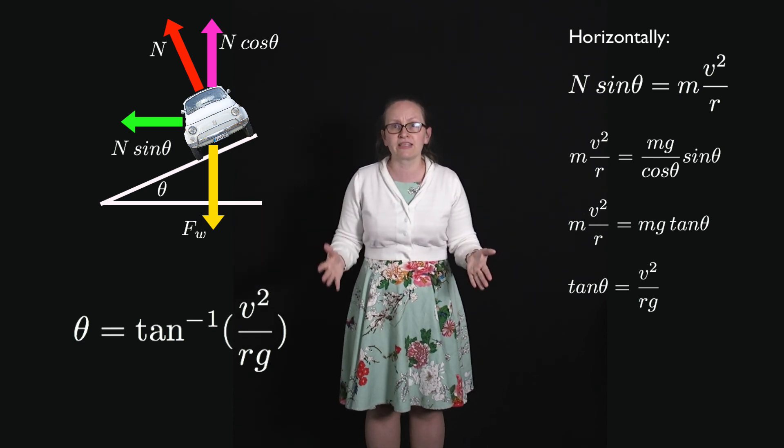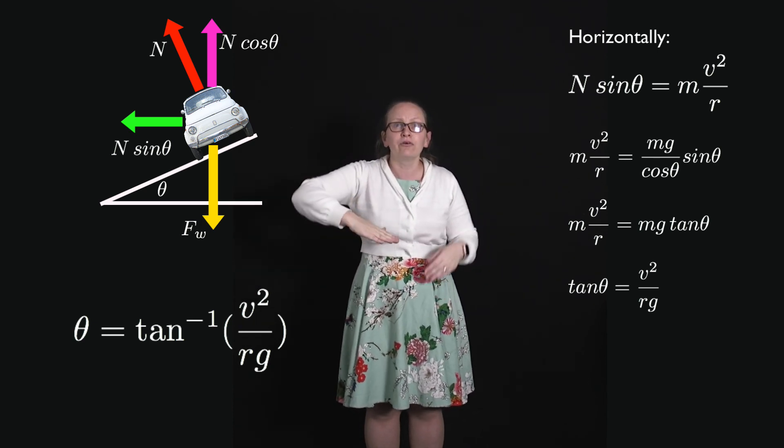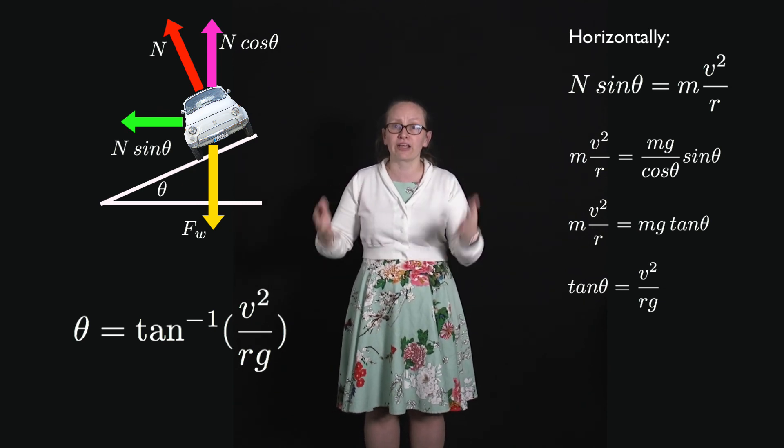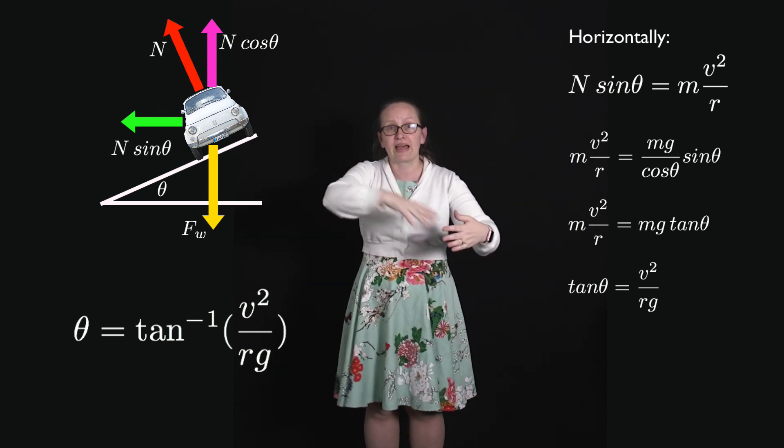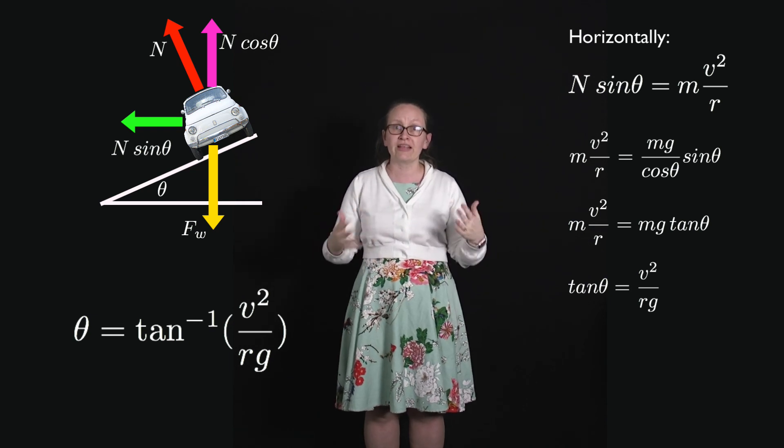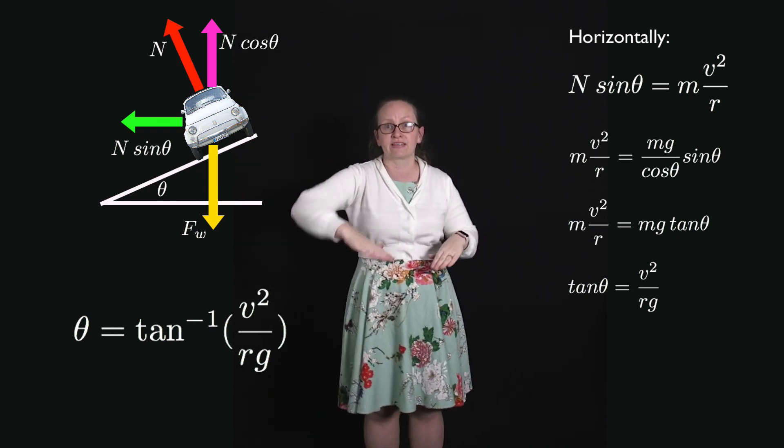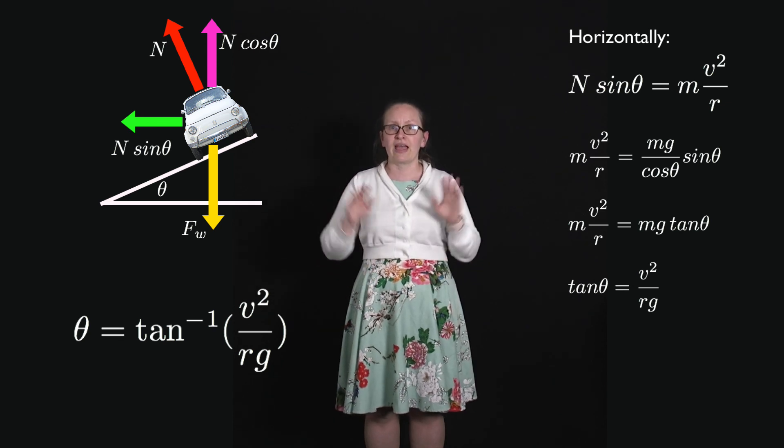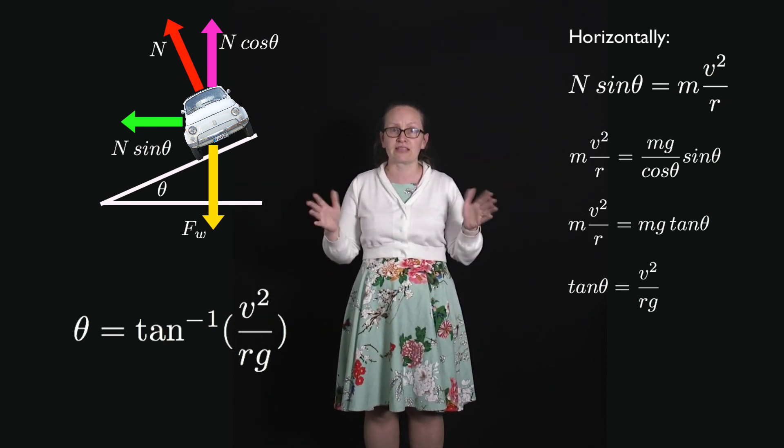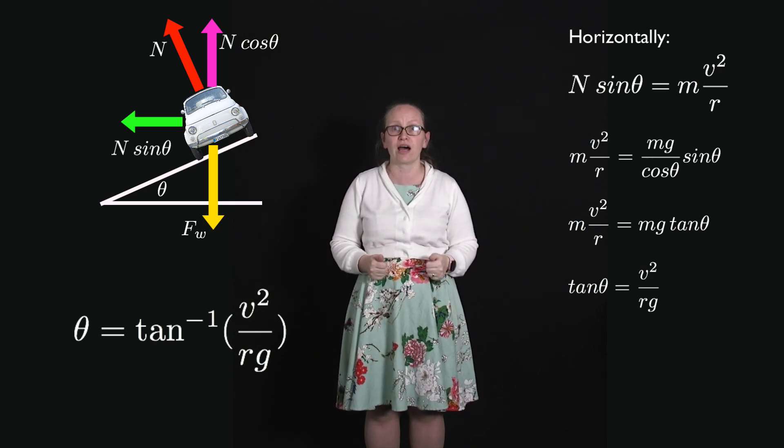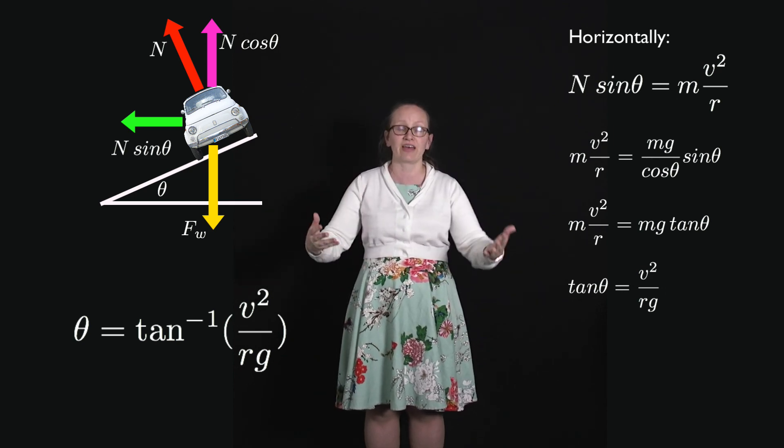We've now come up with an expression for the angle that our curve should be banked at depending on the speed of the cars going around that turn. Depending on the speed limit, we can choose to bank our curve at different angles. You'll notice that it doesn't depend on the mass of the car, which is great because it means that the same angle works for all cars and motorbikes and other road vehicles.